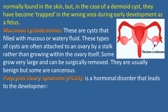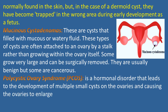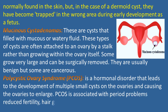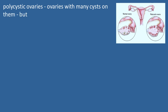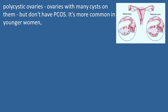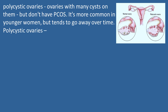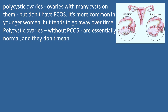Polycystic ovary syndrome, PCOS, is a hormonal disorder that leads to the development of multiple small cysts on the ovaries, causing the ovaries to enlarge. PCOS is associated with period problems, reduced fertility, hair growth, obesity, and acne. Some women have polycystic ovaries — ovaries with many cysts — but do not have PCOS. This is more common in younger women but tends to go away over time. Polycystic ovaries without PCOS are essentially normal and do not indicate a problem.